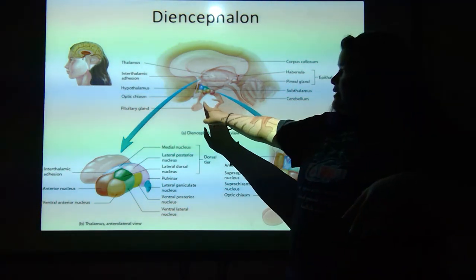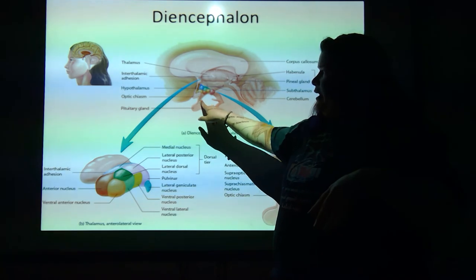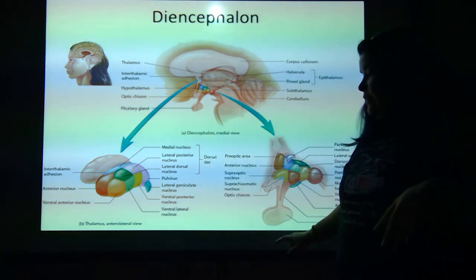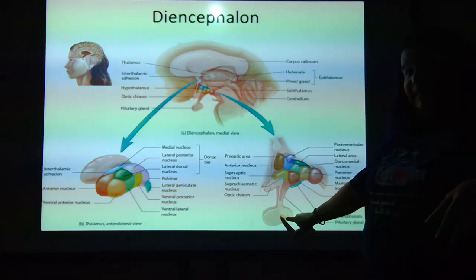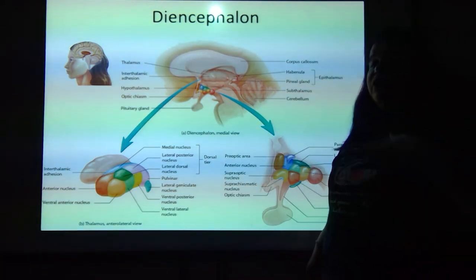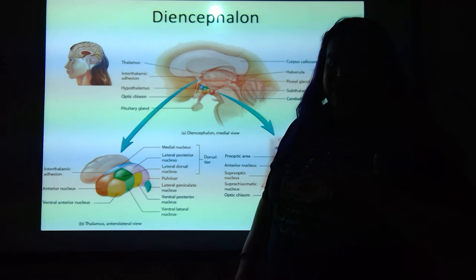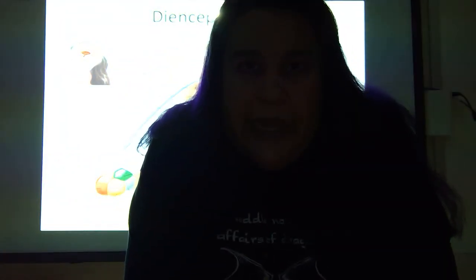This little dangly thing right here is the pituitary gland. Remember the sella turcica from the skull? It looked like a little saddle. That's actually where the pituitary sits — it's inside of that little piece of the skull.